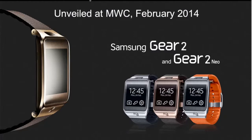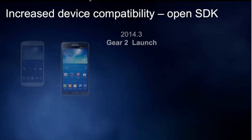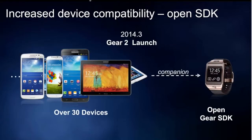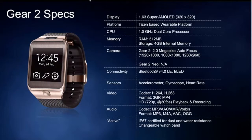In February of this year, we released the Gear 2 and the Gear 2 Neo. We expanded companion devices to include over 30 devices and opened up the SDK, which is now publicly available on our developer site. The Gear 2 has a 1.63-inch Super AMOLED 320x320 display, dual-core processor, 512MB RAM, and 4GB internal storage. There's a version with a 2-megapixel camera and the Gear Neo without a camera.